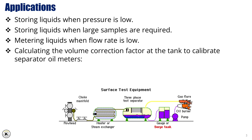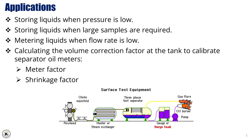By using the gauge tank, we can calculate the volume correction factor at the tank to calibrate separator oil meters. This includes calculating both the meter factor and the shrinkage factor, which are vital for ensuring measurement accuracy in the field.